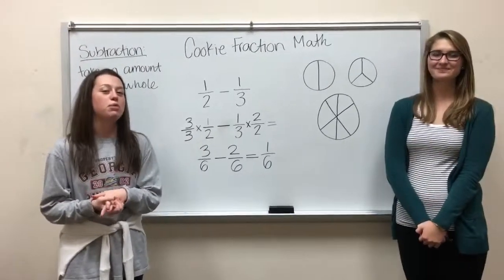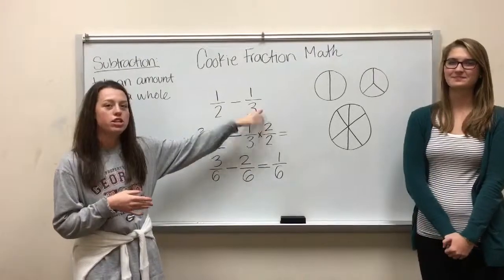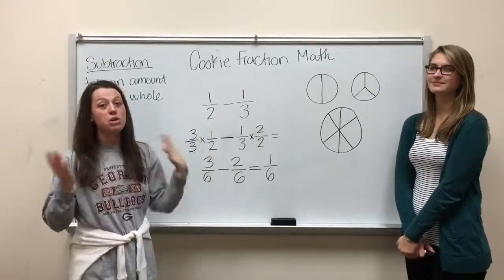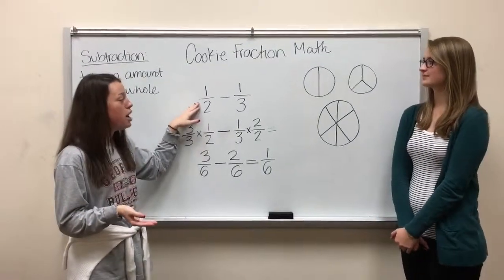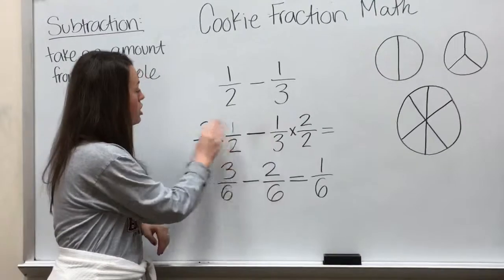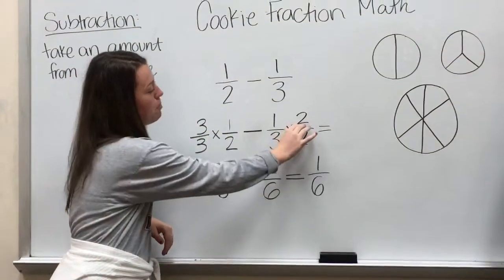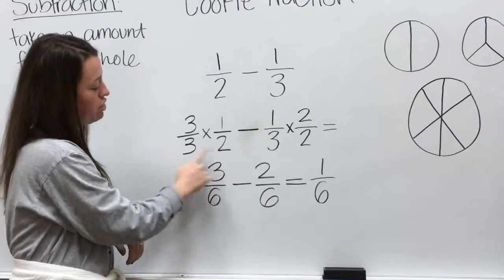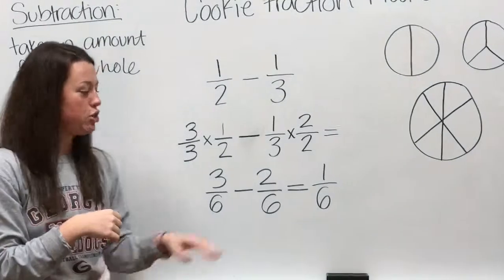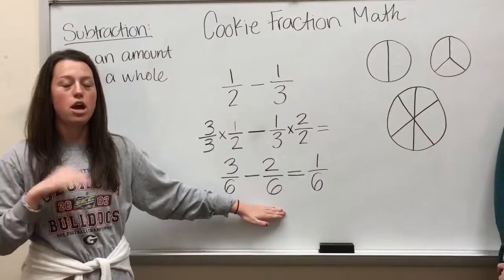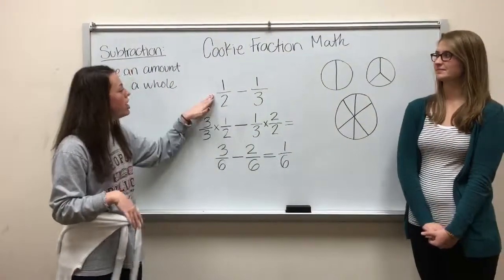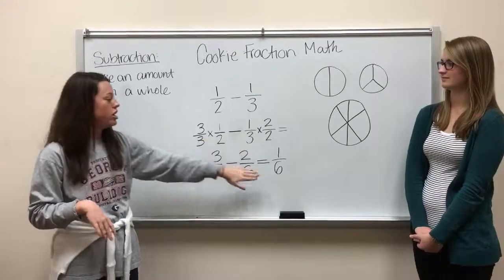Our next example subtraction problem is one-half minus one-third. But we run into the same problem we did with the addition problem — if you don't have a common denominator, you can't subtract straight across. So we need to find a common denominator, making the number on the bottom the same on both sides. We're going to multiply one-half by three over three, and multiply one-third by two over two. So three times one is three, three times two is six — now we have that new fraction. Then one times two is two, and three times two is six. Now we have two sixes on the bottom, which means we can subtract straight across. So three minus two is one, and you carry over the six. You have one-sixth left. So one-half minus one-third, after getting a common denominator, is one-sixth.